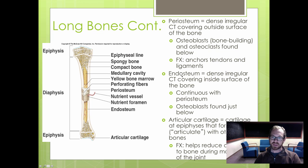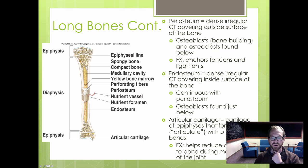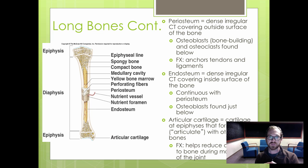The endosteum — 'endo' meaning inside — lines the inside surface of the bone with dense irregular connective tissue, and is connected to the periosteum. Osteoblasts can also be found here. At the ends of our bones, we have articular cartilage, where other bones connect at joints. This cartilage reduces friction and damage from rubbing between bones.